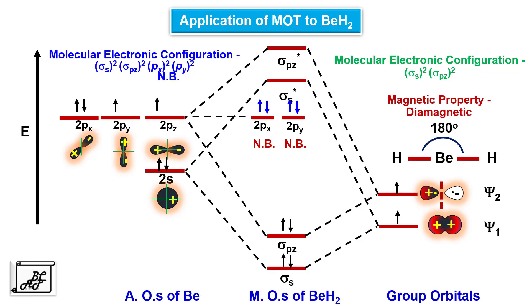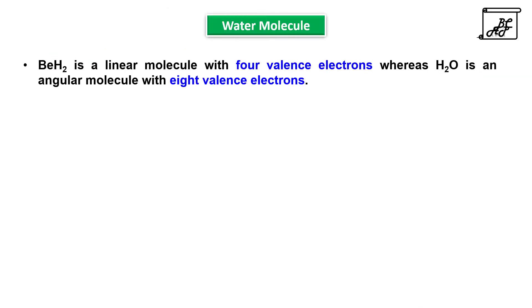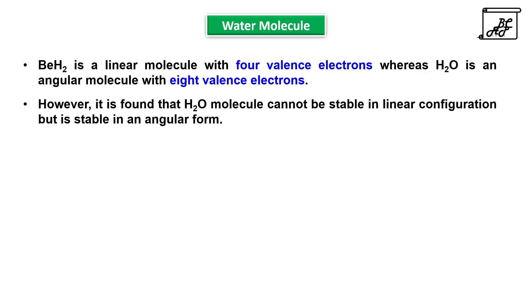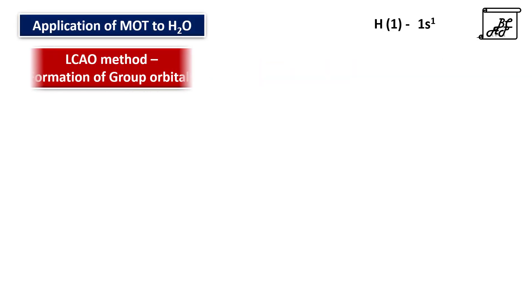So what is the difference between beryllium dihydride and water molecule? Beryllium dihydride is a linear molecule with 4 valence electrons, whereas H₂O is an angular molecule with 8 valence electrons. It is found that the H₂O molecule cannot be stable in a linear configuration but is stable in an angular form. So let's apply molecular orbital theory to the water molecule.